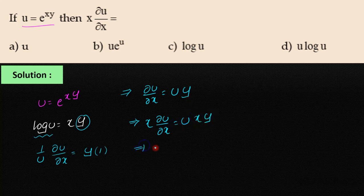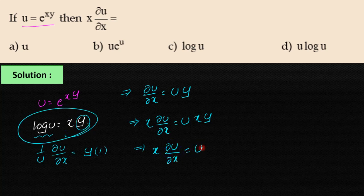That implies x·∂u/∂x = u·xy, and since xy = log u, we get x·∂u/∂x = u·log u. Therefore, the answer is option D.